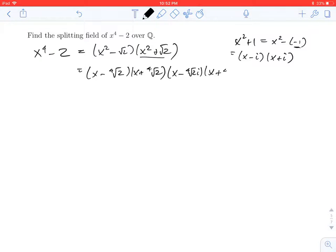x plus the fourth root of 2 times i. If you take the fourth root of 2i and you square it, you'll get the square root of 2 times i squared, which is negative the square root of 2. And so, if you view this x squared plus root 2 as x squared minus negative root 2, hey, there's the negative root 2 you're looking for.